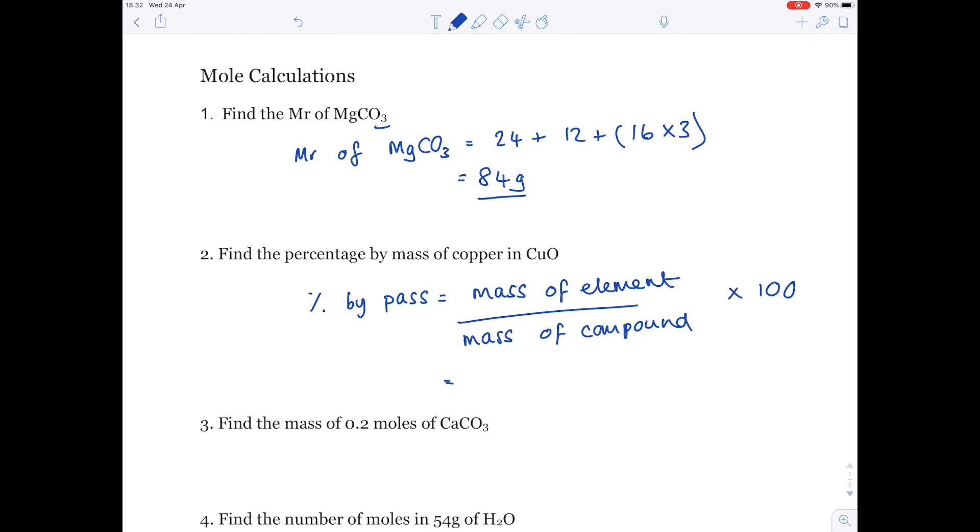So, that ends up being copper, which is 63.5 over 63.5 plus 16, which is the mass of oxygen, times by 100. And you get a value which is 79.9% to 3 sig fig.